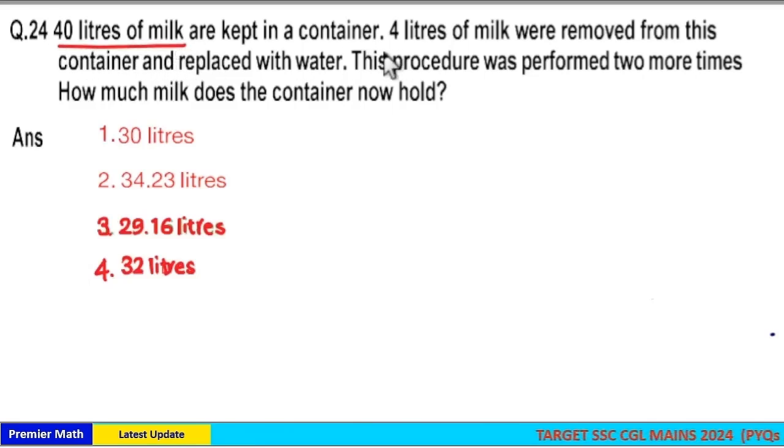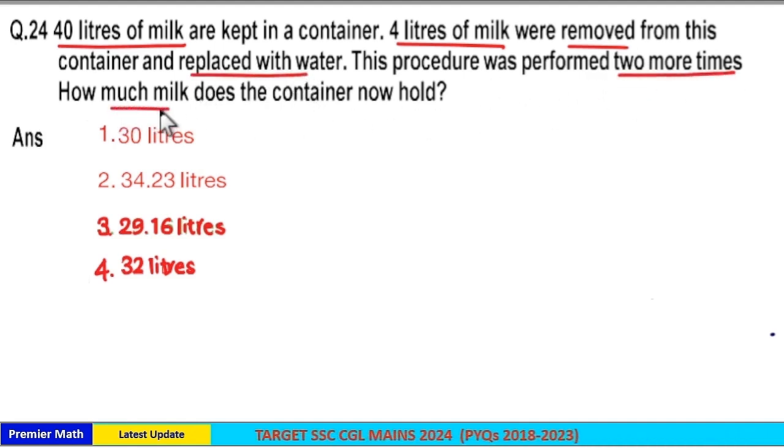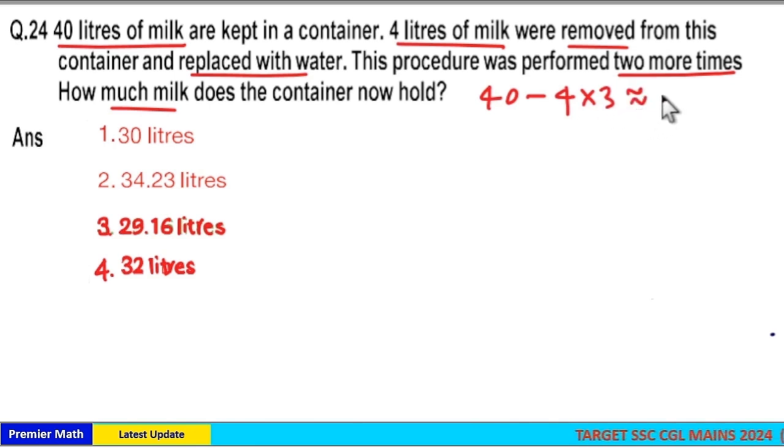40 liters of milk are kept in a container. 4 liters of milk were removed from this container and replaced with water. This procedure was performed two more times. How much milk does the container now hold? Here, 40 liters of milk were present. Out of this, 4 liters is taken out three times, so the final quantity of milk will be